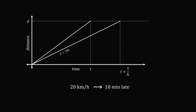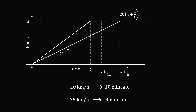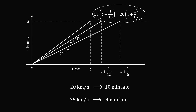The vertical distance traveled is 20 × (t + 1/6). If he travels at 25 kilometers per hour and ends up 4 minutes late, that corresponds to t + 1/15 on the time axis. We draw a vertical line there and connect from the origin; that line has slope 25, with equation d = 25t. Substituting t + 1/15, the vertical distance is 25 × (t + 1/15). Since both vertical distances equal d, we set these two expressions equal to each other — the same equation we had before.